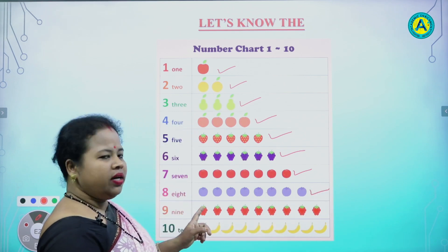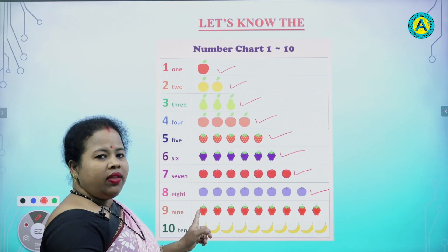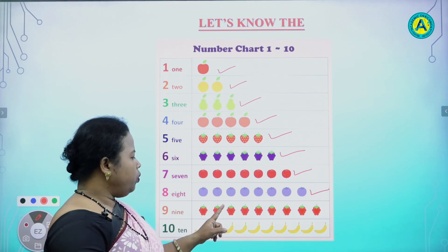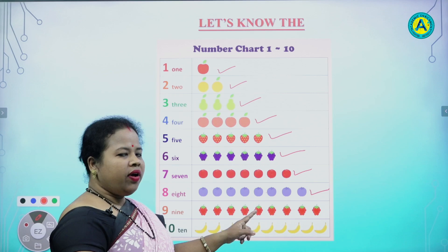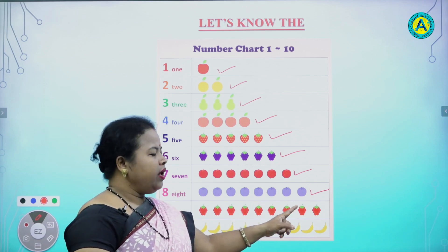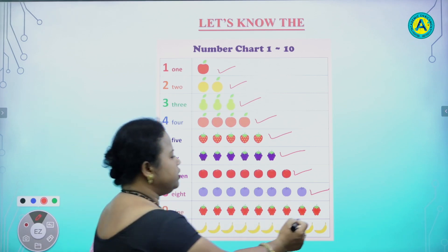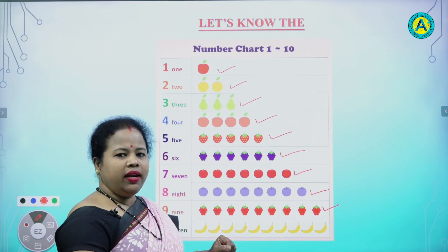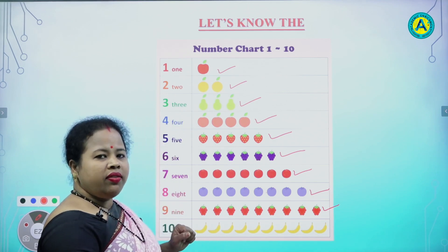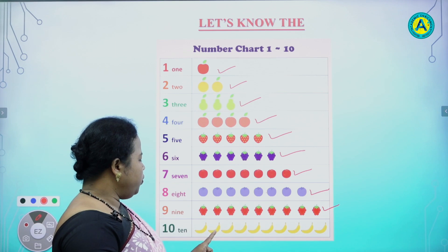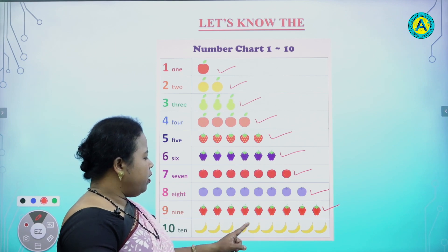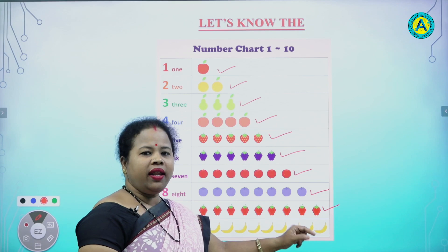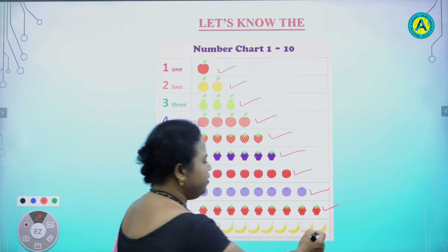Now, students, tell me, in the ninth line, how many fruits are there? 1, 2, 3, 4, 5, 6, 7, 8, 9. Very good. In the tenth line, tell me, how many fruits are there? 1, 2, 3, 4, 5, 6, 7, 8, 9, 10. Very good.